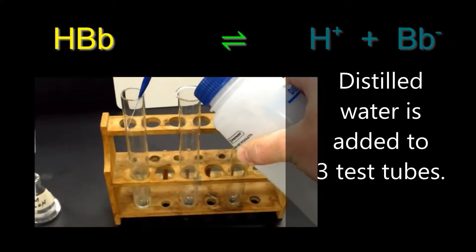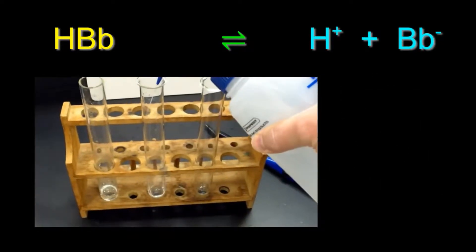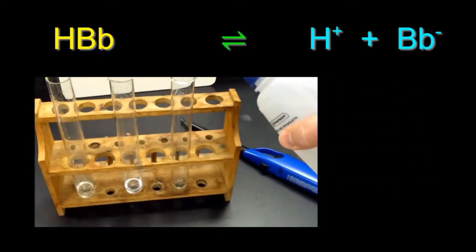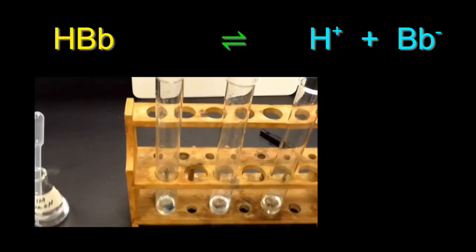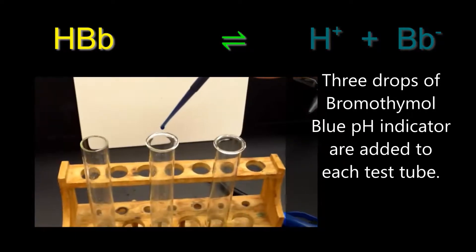The experiment is started by adding water to three separate test tubes. We see the water being added in here. Our next step is to add three drops of bromothymol blue pH indicator to each test tube.